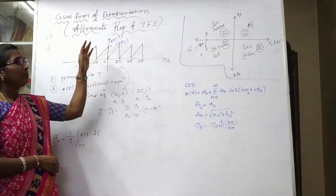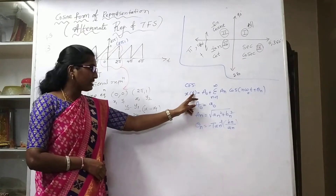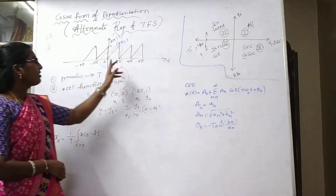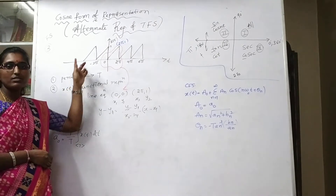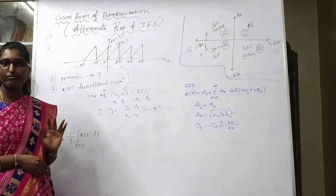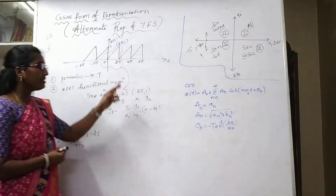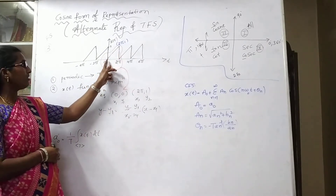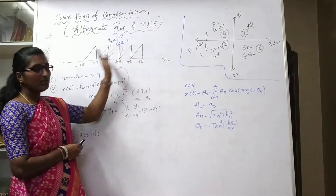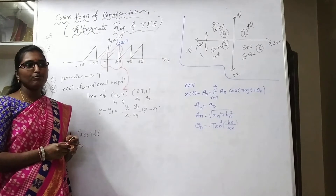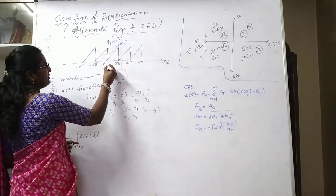Next we will solve one problem using the cosine Fourier series form. First, as we know from previous problems, the first step is to check whether the signal is periodic or not. This signal is a sawtooth kind of signal. Considering a reference shape from 0 to 2.5, the shape repeats between 2.5 to 4.5 and 4.5 to 6.5, confirming it is periodic.